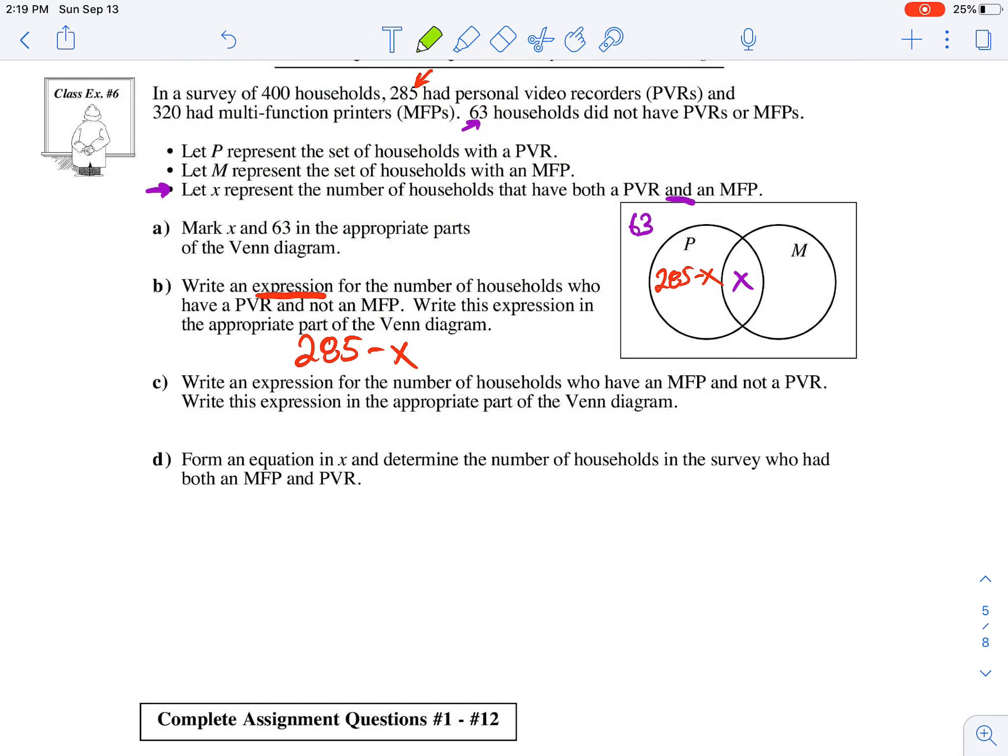And then they want us to write an expression for the number of households who have an MFP and not a PVR. So that would be 320 minus the middle region.